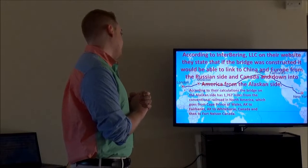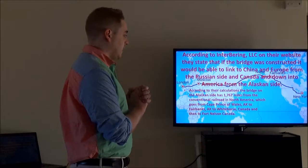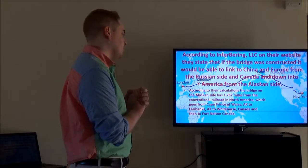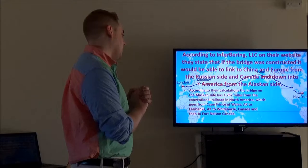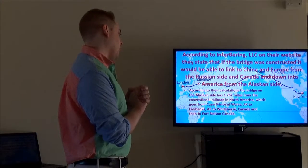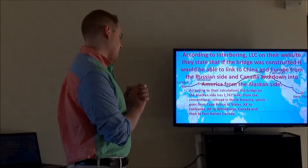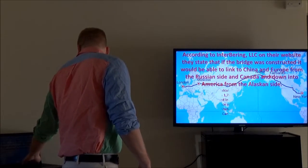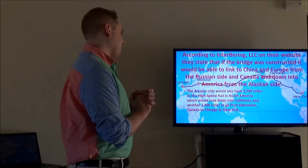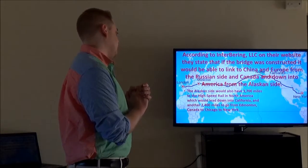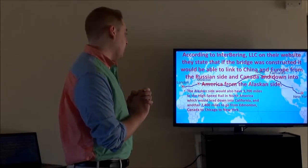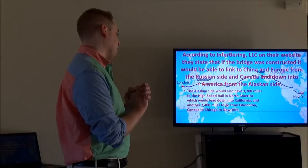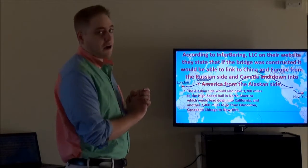According to their calculations, the bridge on the Alaskan side has about 1,800 miles from the Conventional Railroad in North America, which goes from Cape Prince of Wales, Alaska, to Fairbanks in Canada, to White Horse Canada, and then to Fort Nelson in Canada. The Alaskan side would also have about 3,700 miles to high-speed railroad in North America, which would lead down into California and another 2,400 miles to go from Edmonton, Canada, to Chicago, to New York.